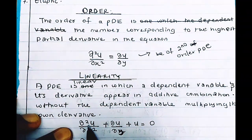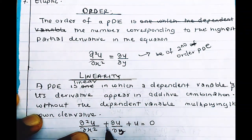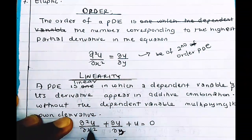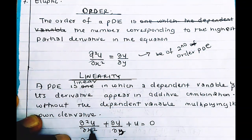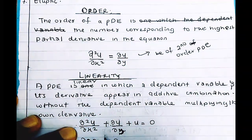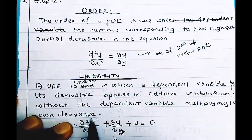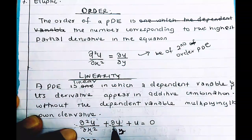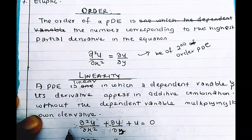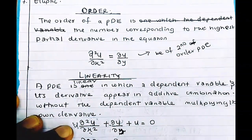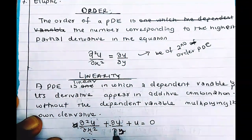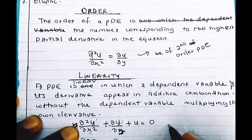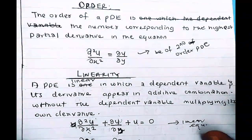In that equation, we have derivatives of the dependent variable u in additive combination, and there is no scenario where u multiplies its own derivative. If we placed u as a coefficient of a derivative, the equation would become non-linear. Since that is not the case here, this is a linear PDE.